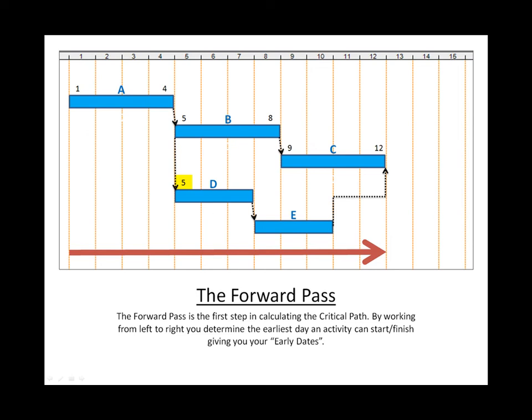You'll maybe notice that we have a start to start relationship between B and D, so that means that D can't start any earlier than B's early start, which is day five. The early finish for D would be day seven.